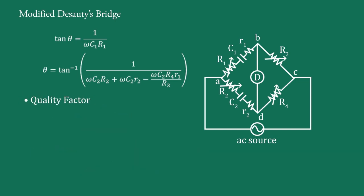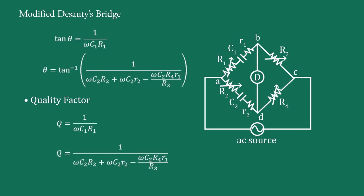For the quality factor Q of the R1-C1 series connection, Q equal to 1/(ωC1R1). Putting the values of ωC1R1 from the above impedance angle calculation, we get Q equal to 1/(ωC2R2 + ωC2·r2 − ωC2·R4·r1/R3).